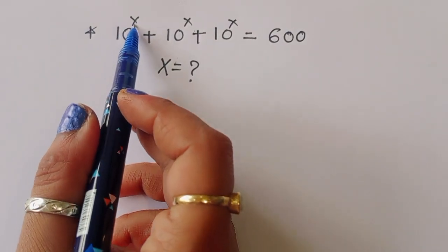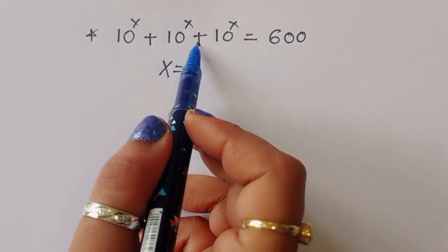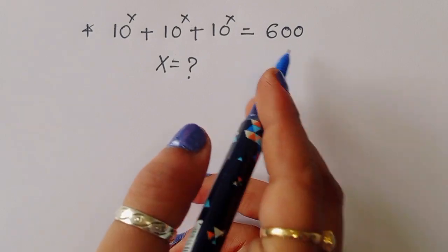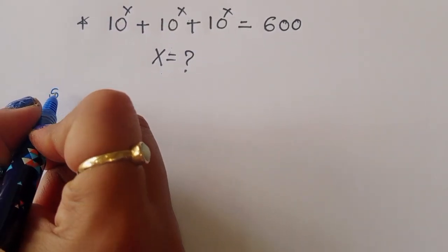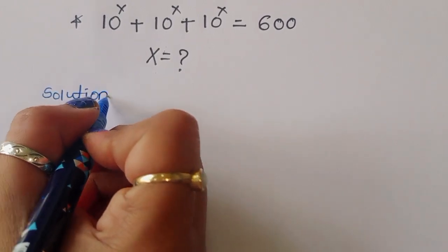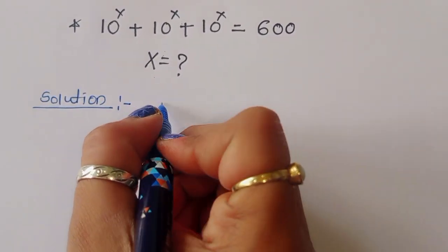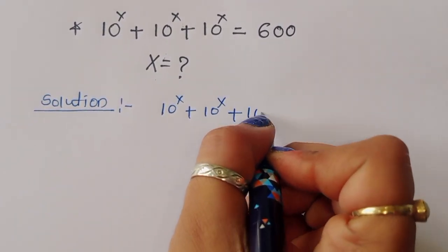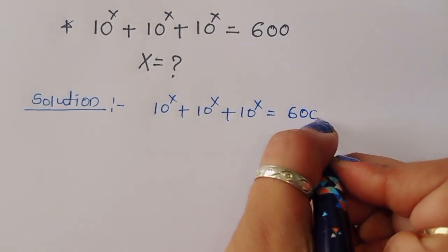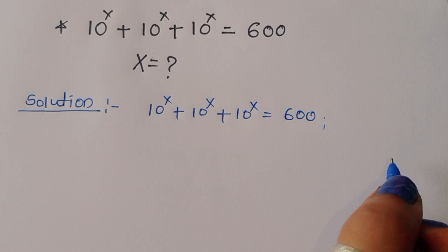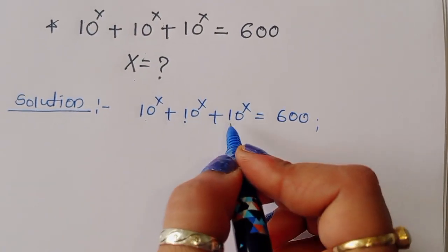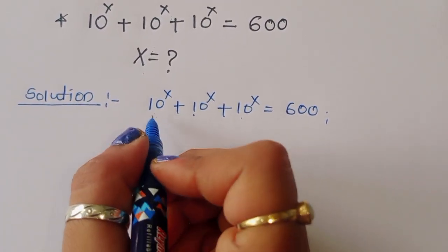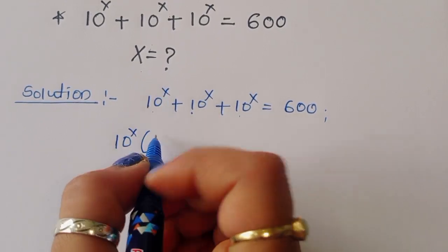The question is: given 10 power x plus 10 power x plus 10 power x is equal to 600, we have to find the value of x. Let's see the solution. We have 10 power x plus 10 power x plus 10 power x equals 600. We can take 10 power x as a common factor.